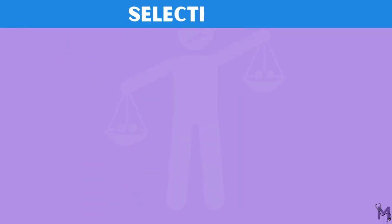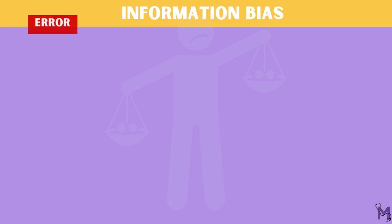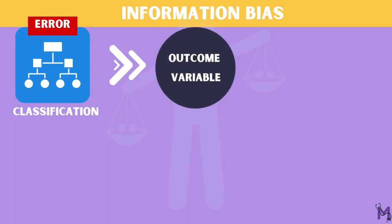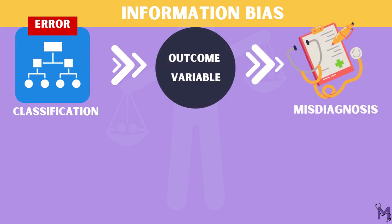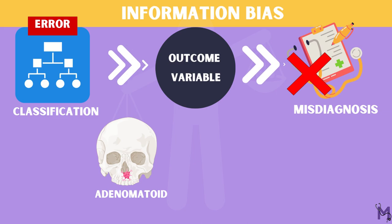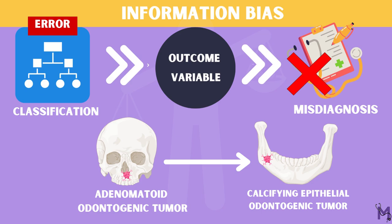The selection bias, like in a case-control study, occurs when a group studied does not reflect the same distribution of characteristics as occurring in the general population. Next is the information bias, which can happen when there is an error in the classification of individuals with respect to the outcome variable. This may result from misdiagnosis of cases or measurement errors. For example, there have been times when an adenomatoid odontogenic tumor has been misdiagnosed as a calcifying epithelial odontogenic tumor, since these are differential diagnoses of each other.